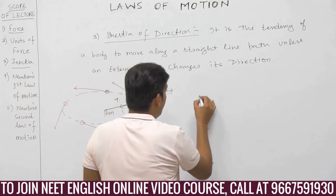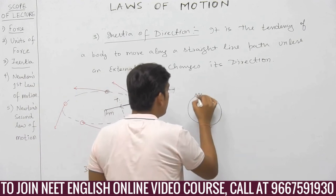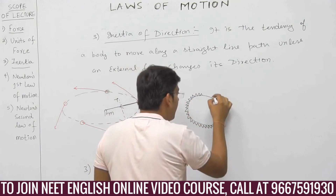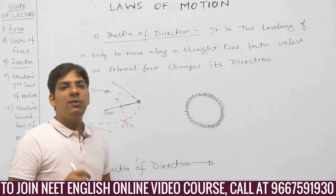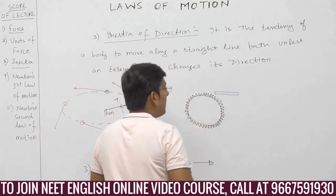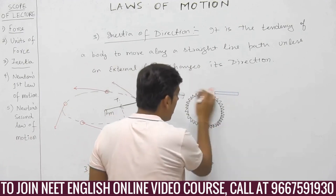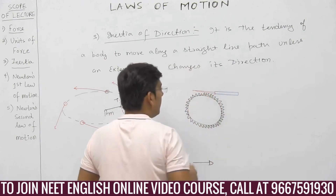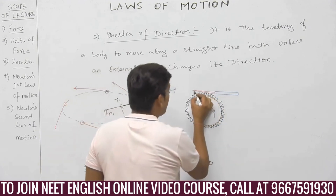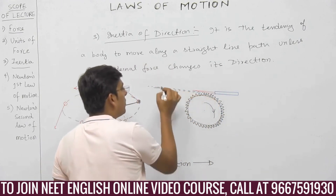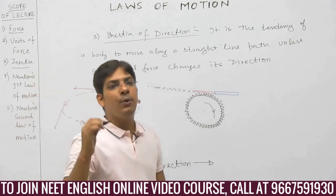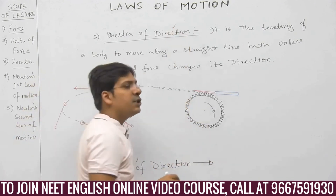Similarly, you must have seen a grinding stone used to sharpen a knife — a gear with sharp edges rotated by a motor or a cycle. The sparks produced fly off tangentially because no external force acts on them, and it is their natural tendency to fly off tangentially. This is basically inertia of direction: you have to apply a force to change the direction of a body, move a body at rest, or stop a moving body.